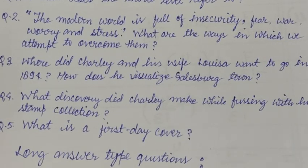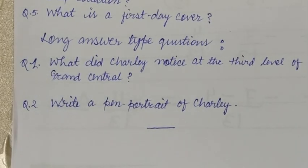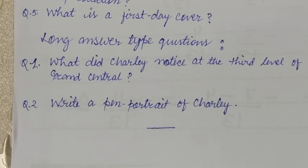Long answer question number two: Write a pen portrait of Charlie. Charlie is the protagonist of the story. He is 31 years old, lives in New York, and is quite fashionable if one looks at his dress. But he is not happy. The stark and harsh realities of the world had compelled him to lie low and remain repressed. Charlie is romantic at heart and wants to escape from his joyless existence. His unhappiness stems from a life and world fraught with stress, fear, and war. Insecurity frightens him beyond repair.